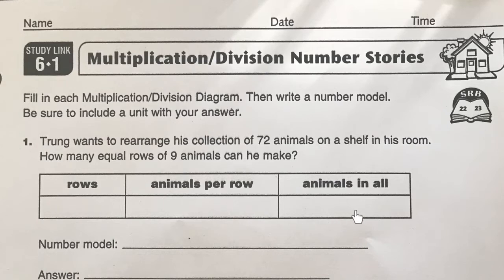So these diagrams here are going to help us sort out these stories and find an answer to the question. So number one, Trung wants to rearrange his collection of 72 animals on a shelf in his room. How many equal rows of nine animals can he make? So we need to decide what's going where for the numbers they give us.